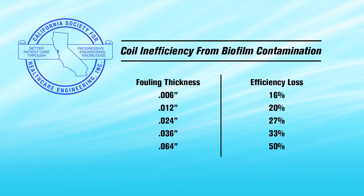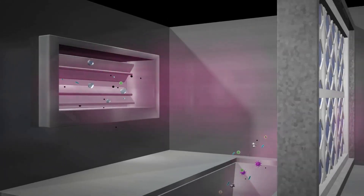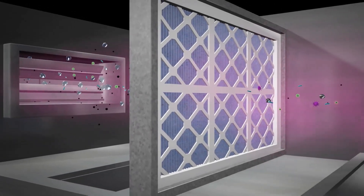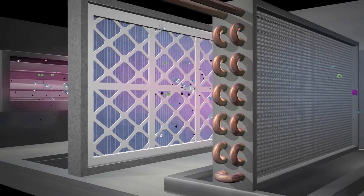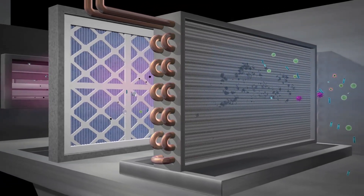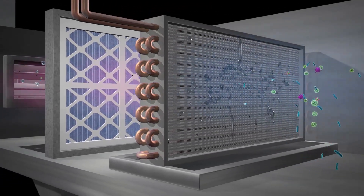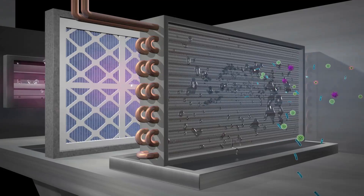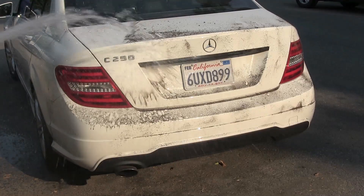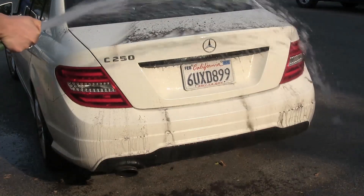According to the California Society for Healthcare Engineering, it only requires a 1.5 mm fouling on the coil fins — 0.006 of an inch — to reduce the coil's efficiency by 16%. When particulates pass through the primary filters and settle on the coil, we should expect the condensate that is produced when the warm air meets the cold coil to wash the particulates down into the drain pan, as easily as one washes mud off a car.